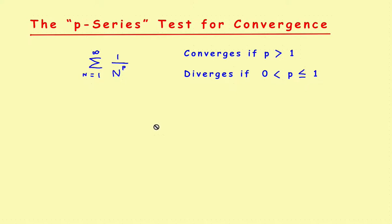This video is going to be about another test for convergence called the p-series test for convergence. This one is very easy to use if you happen to have a series in the right form. If you have a series that you can manipulate into the form of 1 over n raised to the p-power, then you can quickly show whether this series converges or not by just looking at the value of p.